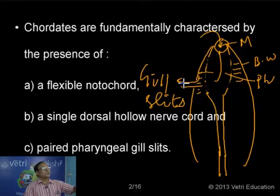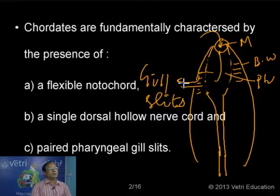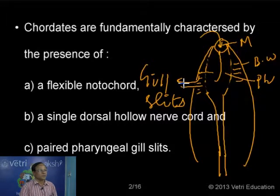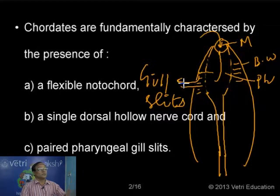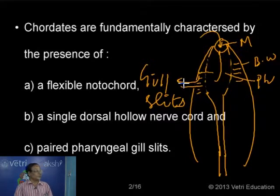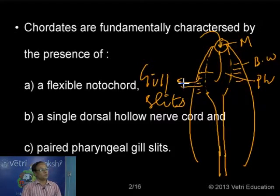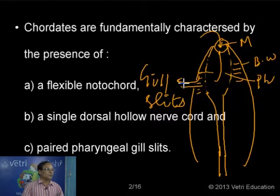In the case of fishes, we know we have the gills. In the case of frog, in the larval stage, the tadpole larva contains gills for respiration. But the adult frog has mainly the lungs and skin. The reptilian forms have lungs.